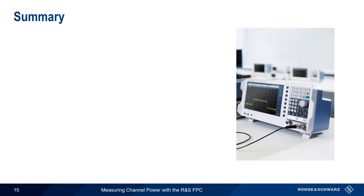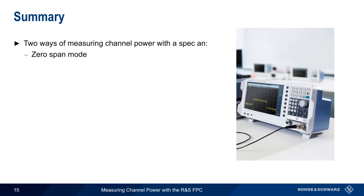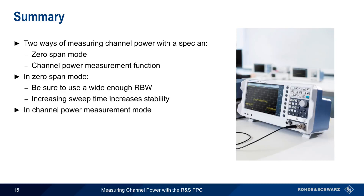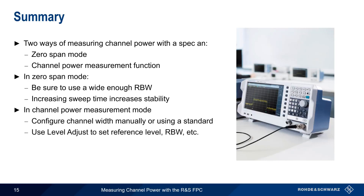Let's summarize what we've covered. There are two ways of measuring channel power with a spectrum analyzer. The first is using zero-span mode, and the second is a channel power measurement function. If measuring in zero-span mode, it's important to use a resolution bandwidth that's wider than the channel we're measuring. Also, increasing sweep time will help increase measurement accuracy and stability. In Channel Power Measurement mode, we need to configure the width of the channel, either manually or using a predefined standard. Using the FPC's Level Adjust function optimizes parameters like reference level, resolution bandwidth, etc.